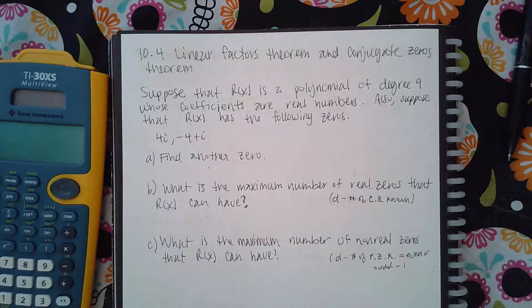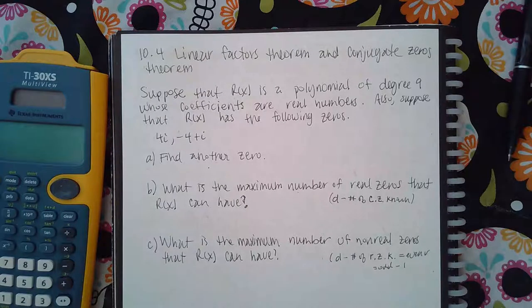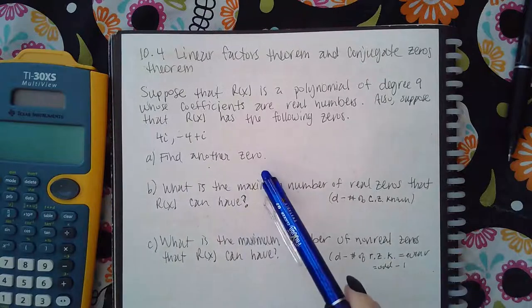Suppose the polynomial has the following zeros: 4i and -4+i. The first part wants you to find another zero. There are two different answers here.